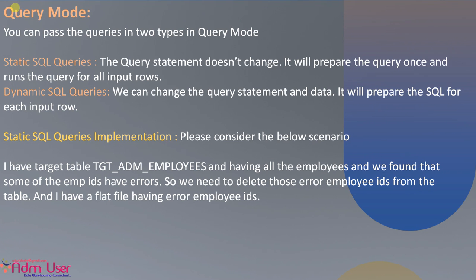I will discuss query mode in SQL transformation. In query mode, you can pass the queries directly to the database. You can pass two types of queries: static SQL queries and dynamic SQL queries. Static SQL queries won't change the SQL statement because it will prepare the SQL statement at once and run the query — it will execute that query for all input rows. Dynamic SQL queries allow us to change the SQL statement based on the input data, and it will prepare the SQL queries for each input row.